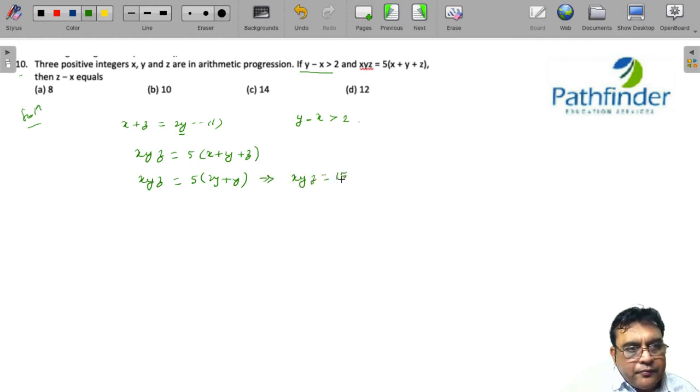Y cancels out, so xz equals 15. Since x and z are positive integers, by factorization the values of (x, z) can be (1, 15), (3, 5), (5, 3), or (15, 1).